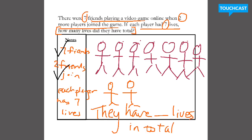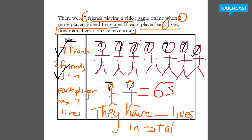Each player has seven lives. So in the game, each player has seven lives — so this player has seven, this player has seven: seven, seven, seven, seven, seven, seven, seven. So how can I figure out the total number of lives each of these people have? Well, that's pretty simple. I could either multiply seven times nine, because there's nine people, or I could count by seven: seven, 14, 21, 28, 35, 42, 49, 56, 63. So they have 63 lives in total.